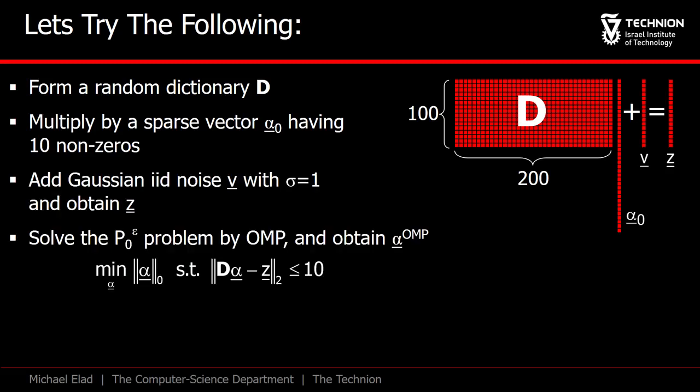Then, in an attempt to denoise z, we run the OMP to approximate the solution of P0 epsilon. And we also run the random OMP 1,000 times, getting 1,000 possible alternative solutions.